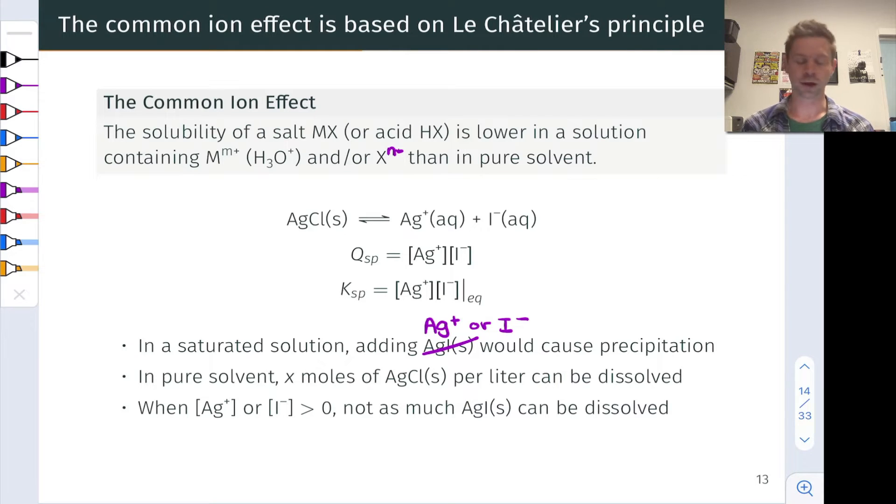So the common ion effect, what is it? It is an effect wherein the solubility of a salt MX or an acid HX is lower in a solution containing either the cation M+, or H3O+ in the case of an acid, or the anion X^n- in the case of the salt, than in pure solvent. In other words, the common ion dissolved in the solution lowers the solubility of the salt or acid. And here, the dissolved ion, be it the M cation or the X anion or H3O+, is what we mean by a common ion. It's an ion in common with the ions in the salt. Well, this is why this is called the common ion effect.